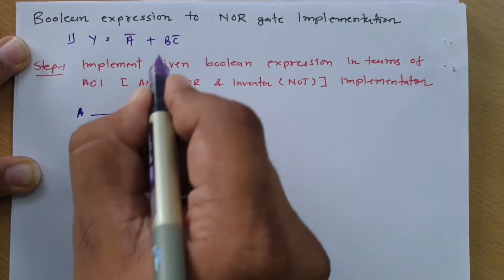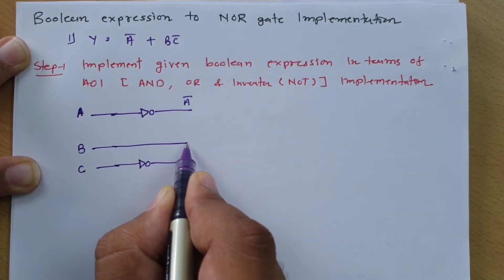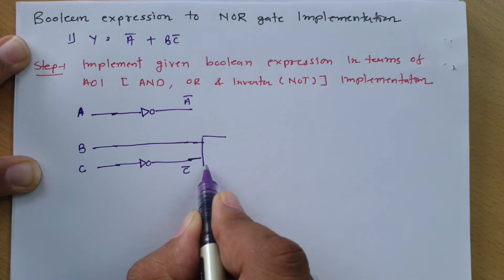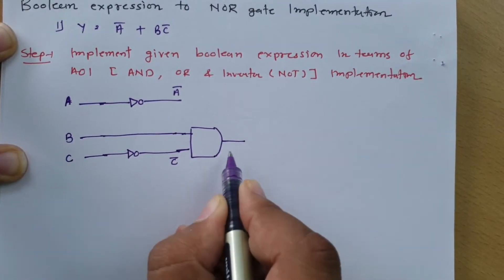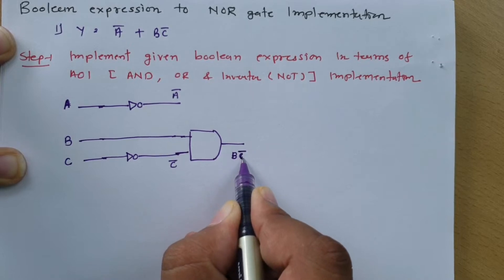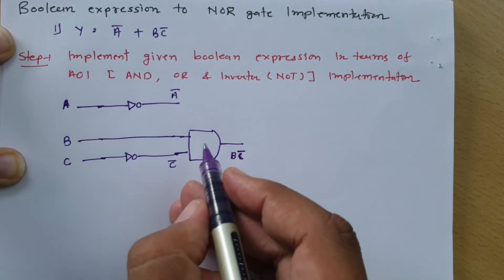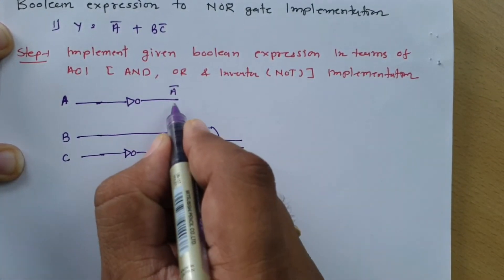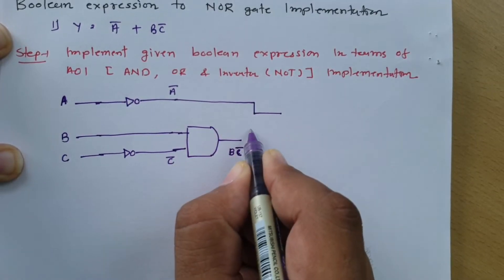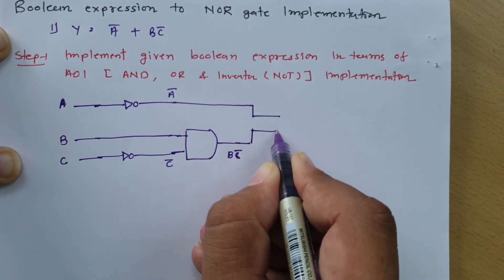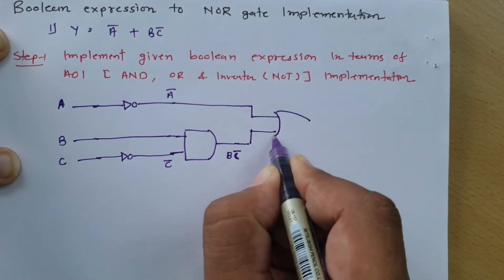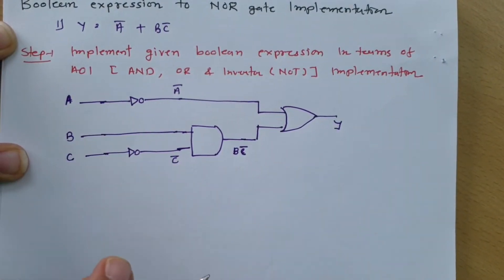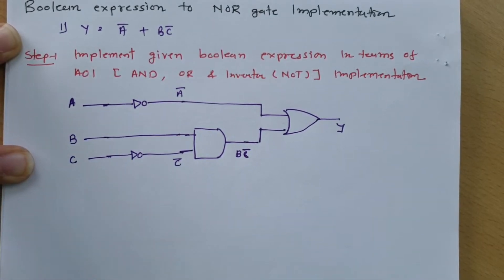Now we have B and c̄, so the AND operation needs to be performed. I will connect an AND gate here, which will result in bc̄. Now we have ā and bc̄ with an OR operation. So with ā and bc̄ we perform OR operation, and that gives us our output Y. This is how we can have AOI implementation from the given Boolean expression.